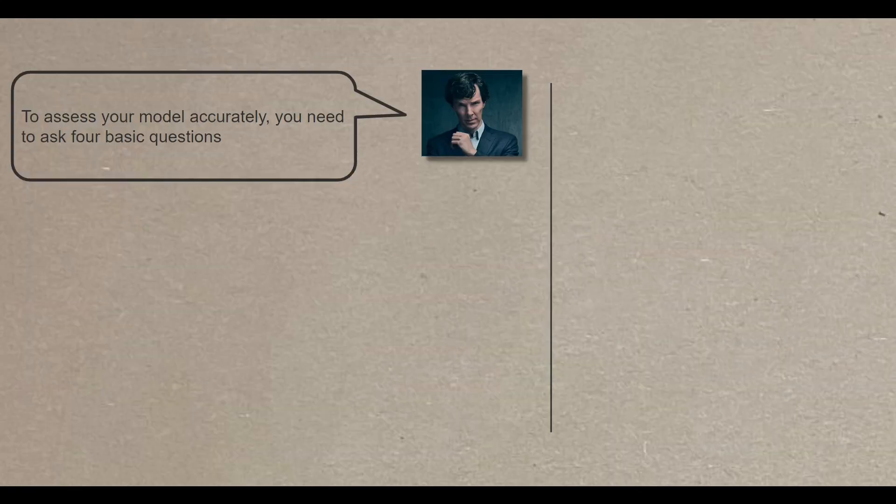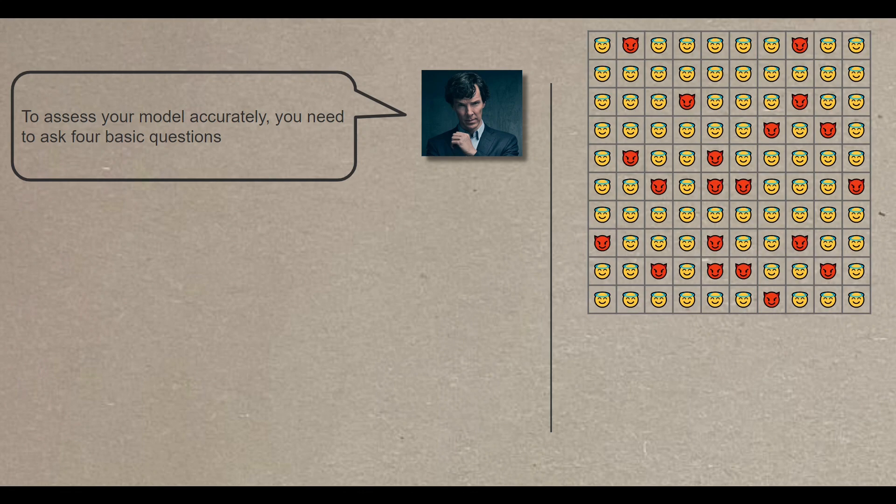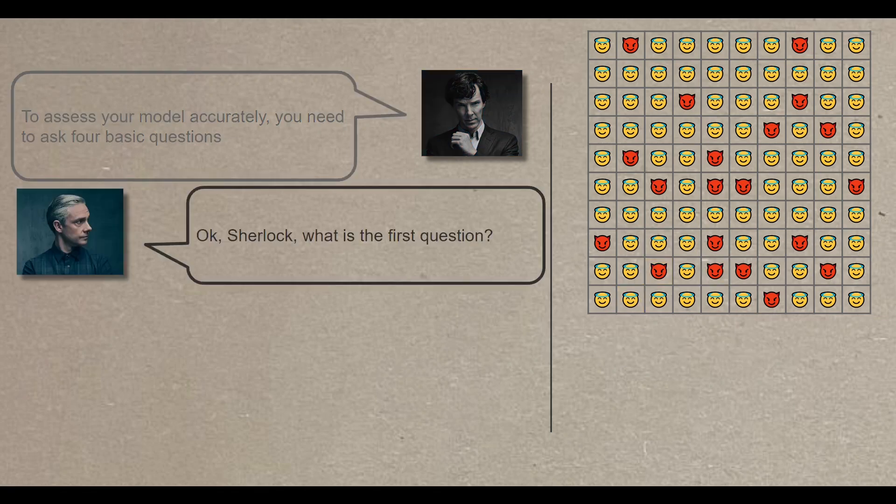Listen carefully Watson. To assess your model accurately, you need to ask four basic questions. Now before delving into Sherlock's four questions, let's consider these 100 people as our testing dataset. The evil emoji represents a bad guy akin to a real criminal, while the halo emoji symbolizes a good innocent individual. If Watson's model predicts a person as a criminal, it will be shaded in red. Otherwise, it will be shaded in yellow.